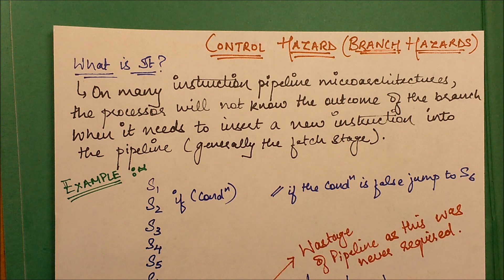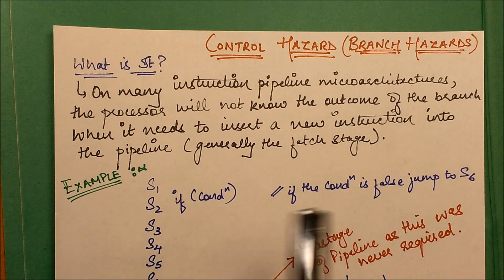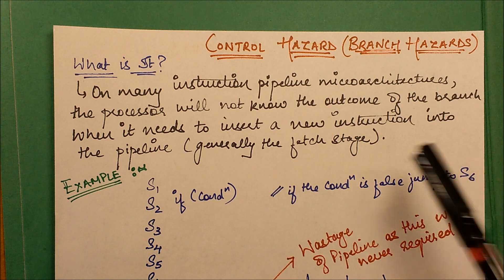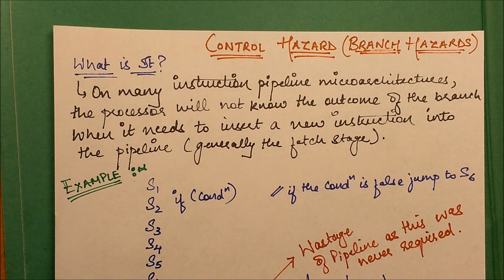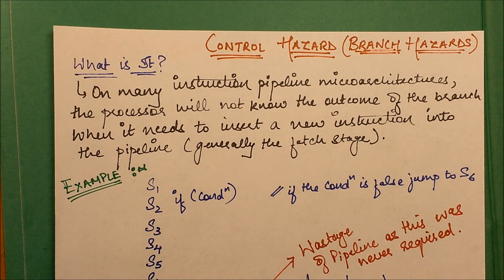Let's study what it is and take its basic idea. The scenario is that in many instruction pipeline microarchitectures, the processor will not know about the outcome of the branch when it needs to insert a new instruction into the pipeline, generally the fetch stage. So during the fetch stage, it is not able to know the outcome of the branch instruction.